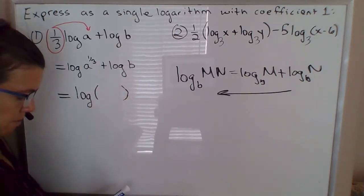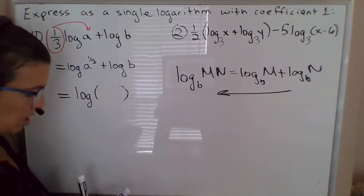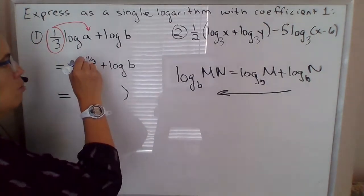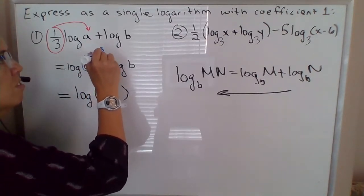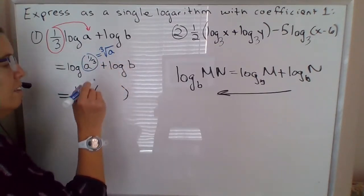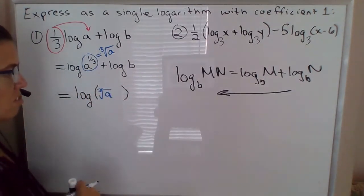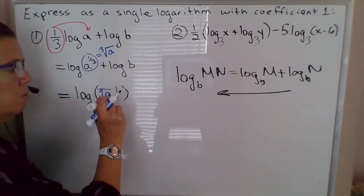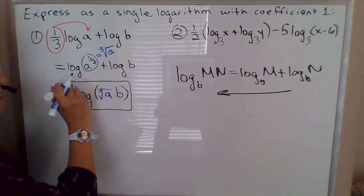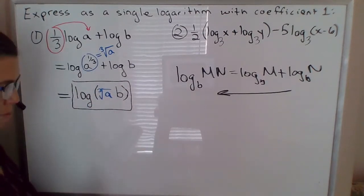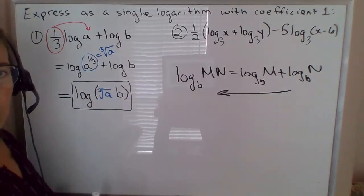Now one other thing. So the 1/3 power, remember these fractional exponents like this represent roots. So a to the 1/3 represents the cube root of a. And so this is equal to the cube root of a times b, where the b is not under the radical. So here is your nice, neat, condensed logarithmic expression that you can form from this sum in example number one.